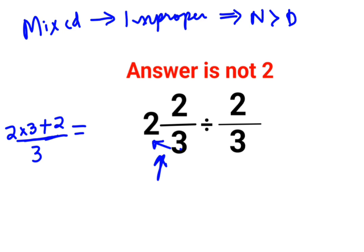So this eventually comes out to be 8/3. Now, your question has changed to 8/3 divided by 2/3.